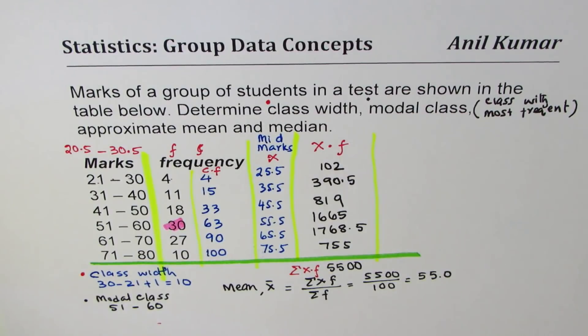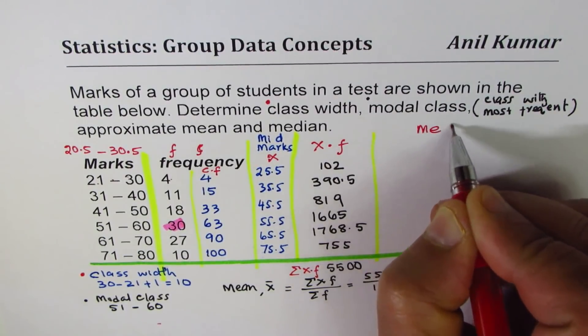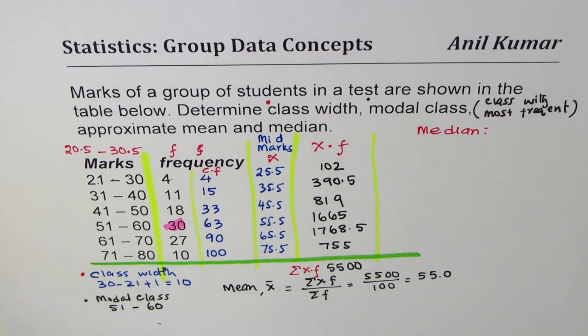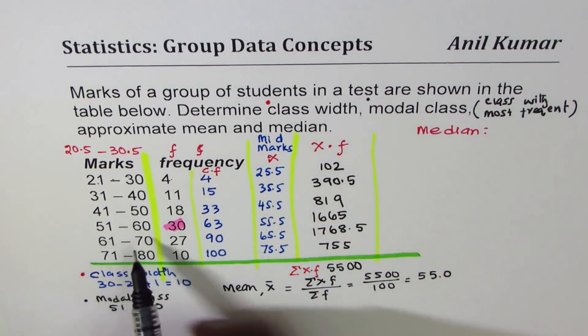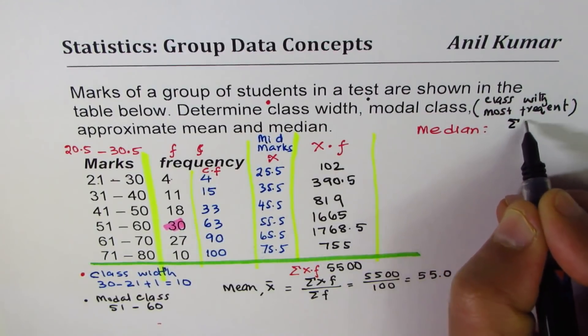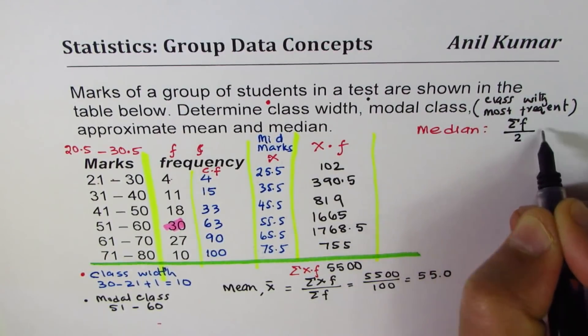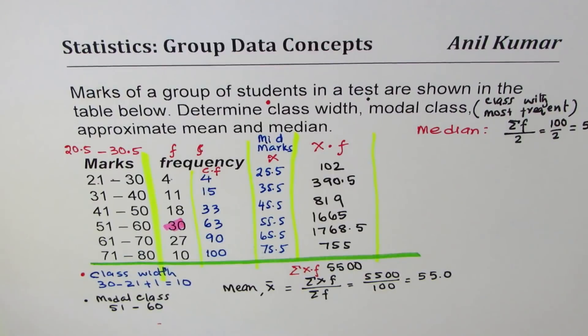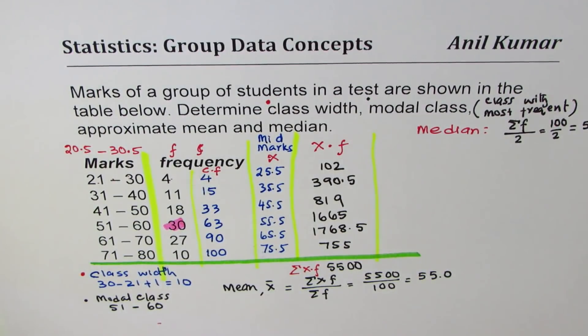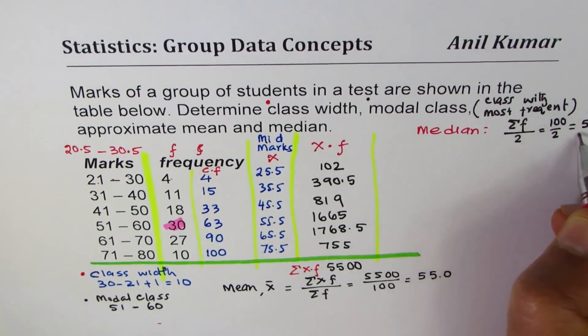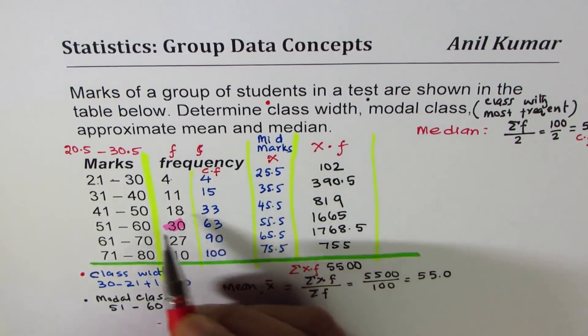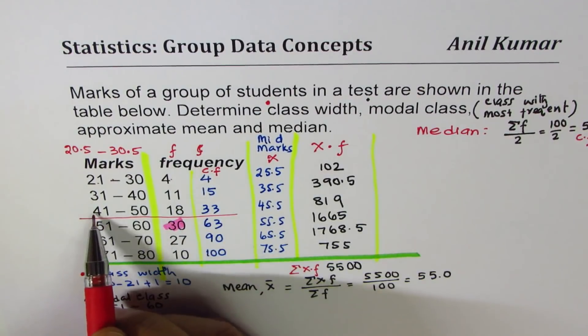Now let's look into median. Median should be right in the center. So median you can always calculate where will it lie. If I do half of my frequency sum which is 100 divided by 2, we get the number 50. So median is where the number 50 comes in our cumulative frequency. So we have to check 50 in cumulative frequency.